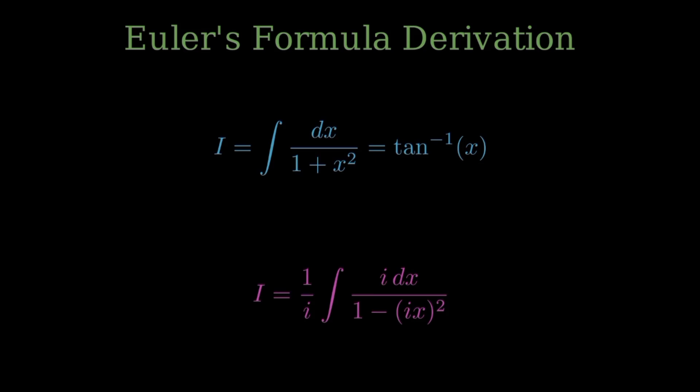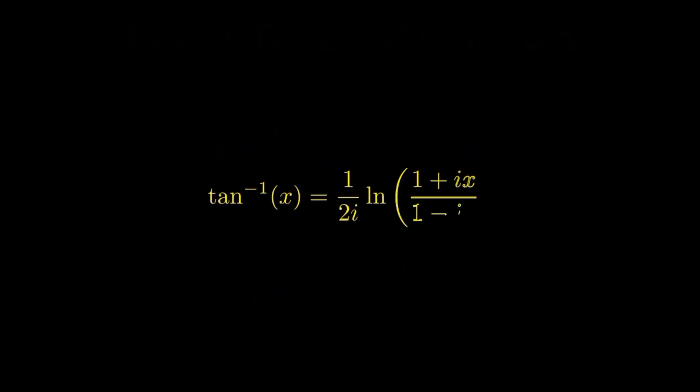Since both expressions equal the same thing, we can set them equal. That gives us arctangent of x equals 1 over 2i times the natural log of the fraction, 1 plus ix over 1 minus ix. This connects a trig function to the logarithm of a complex fraction. That's the key first step.